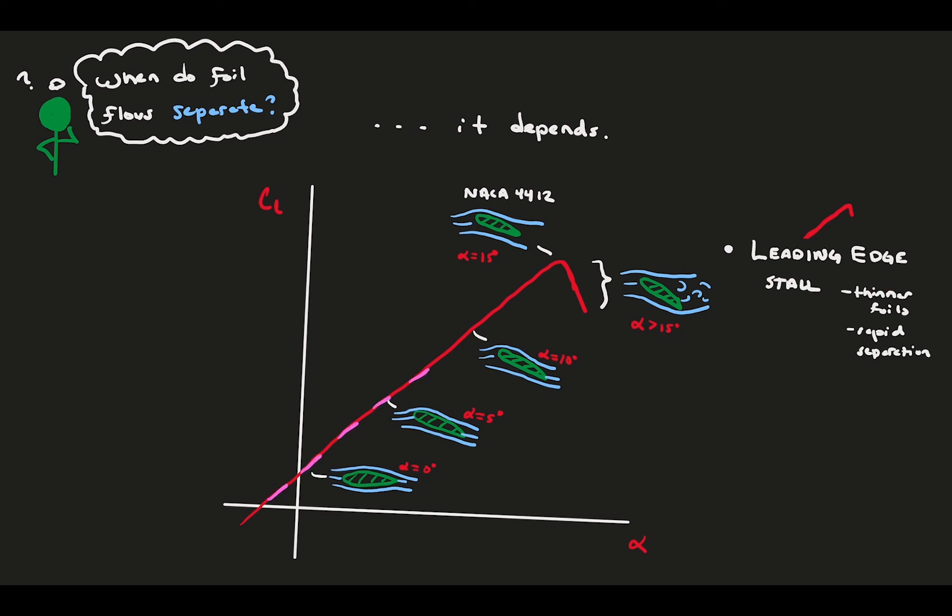However, there's a second type of stall that's much more gradual. This is the trailing edge stall, because the stall begins at the trailing edge and slowly climbs up the foil with an increased attack angle. Thicker foils tend to undergo trailing edge stall, and thinner foils tend to separate more rapidly. As you can see, we can find the footprint of separation in the performance. Unfortunately, it's a lot harder to predict ahead of time.